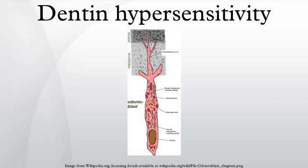Gingival recession and cervical tooth wear can be avoided by healthy dietary and oral hygiene practices. Using a non-traumatic toothbrushing technique will help prevent receding gums and tooth wear around the cervical margin of teeth. Non-abrasive toothpaste should be used, and brushing should be carried out no more than twice per day for two minutes on each occasion.